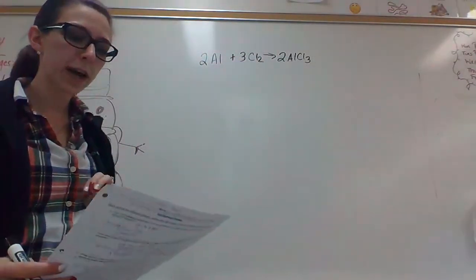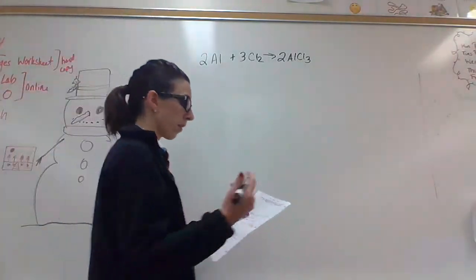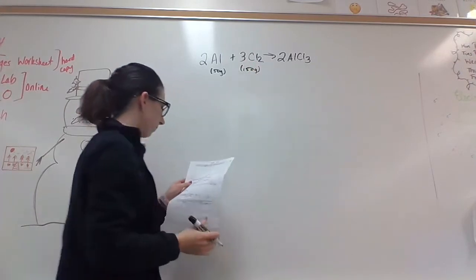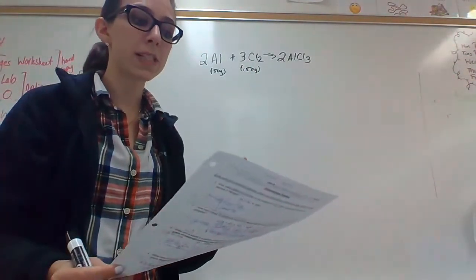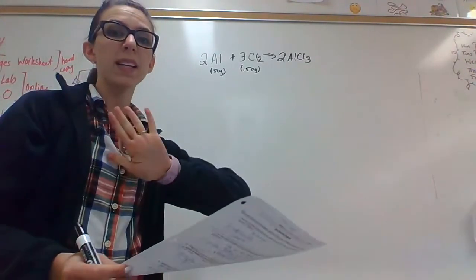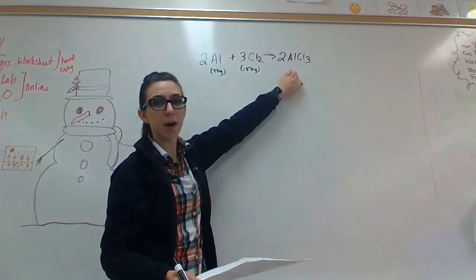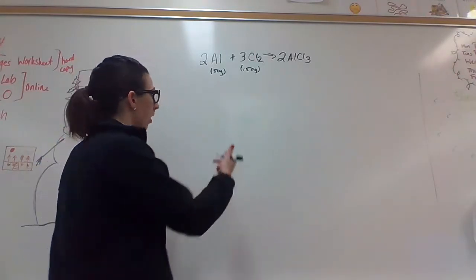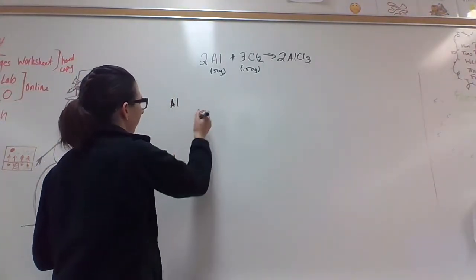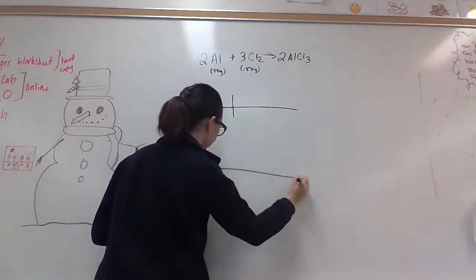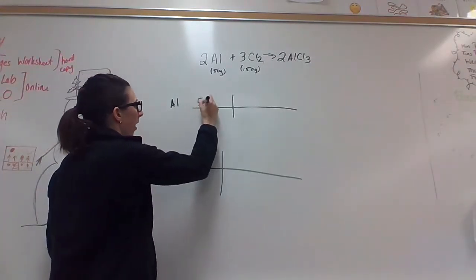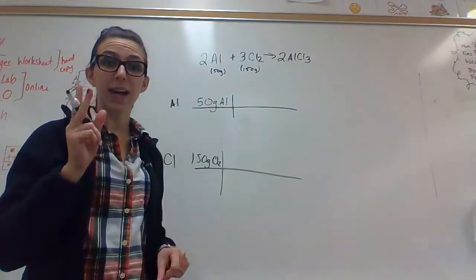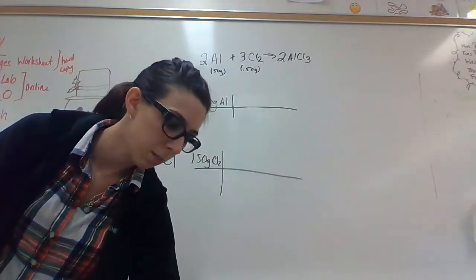For our next problem, number seven gives us the equation: aluminum plus chlorine creates aluminum chloride — 2Al plus 3Cl2 creates 2 moles of AlCl3. So there are two moles of aluminum, three moles of chlorine, and two moles of aluminum chloride. It says when 50 grams of aluminum reacts with 150 grams of chlorine — which reactant is limiting the amount of product formed? So which of these makes the least amount of aluminum chloride? Remember Cl2 is diatomic, so you have to account for that when calculating the molar mass.